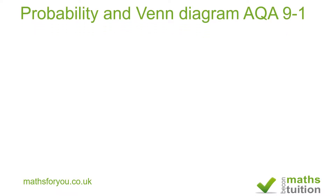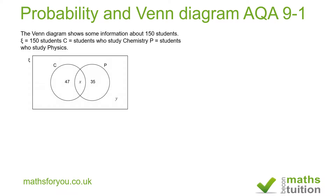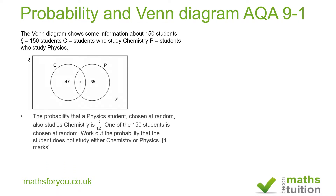Well hello and welcome to this exercise on probability and Venn diagrams. AQA question 9-1, that is GCSE 9-1, and it says the Venn diagram shows some information about 150 students. C stands for students who study chemistry and P stands for students who study physics. The probability that a physics student chosen at random also studies chemistry is 5 over 12. One of the 150 students is chosen at random — work out the probability that the student does not study either chemistry or physics, and this carries four marks.